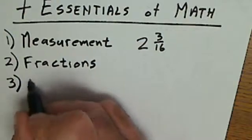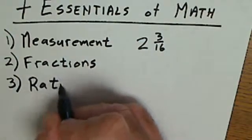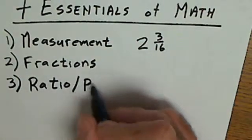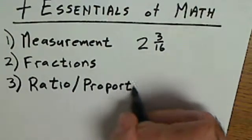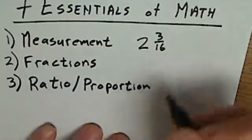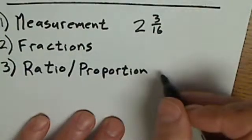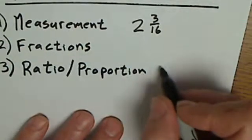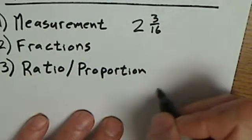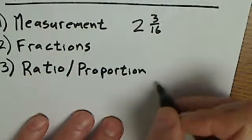Number three is ratio and proportion. A ratio is one number over another number. So if you're mixing oil in your gasoline for your lawnmower, you mix it at a ratio of 50 to 1, 50 parts gas to one part oil.